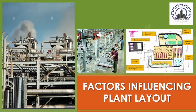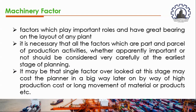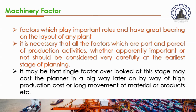Another factor influencing plant layout is machinery. The second in importance to the product or material itself is the process or operation machinery and equipment. There are various factors which play important roles and have great bearing on the layout of any plan. For proper layout, all factors which are part and parcel of production activities should be considered carefully at the early stage of planning. A single factor overlooked may cause the planner problems later on by way of high production cost or long movement of material.